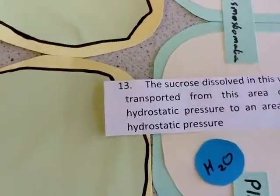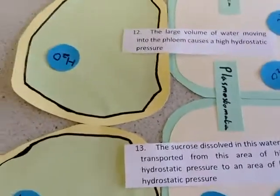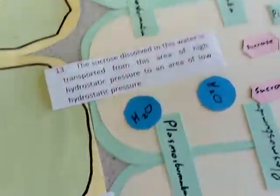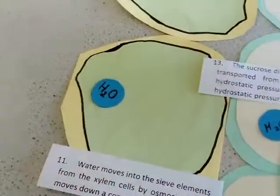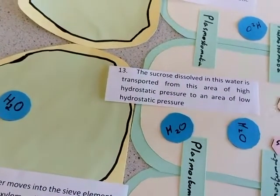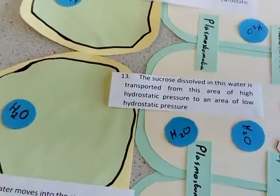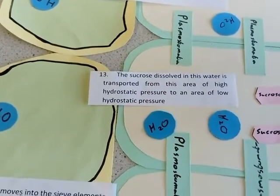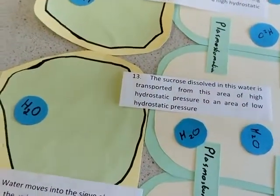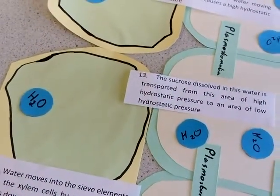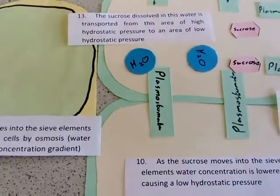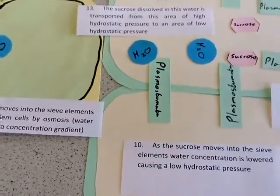This large volume of water that moves into it causes hydrostatic pressure. This increase in hydrostatic pressure enables the sucrose to be dissolved in the water. Because your hydrostatic pressure is always going to push things from an area of high hydrostatic pressure to an area of low hydrostatic pressure, this will start to move the sucrose from this area where it's a source, so where it's being made, down the plant until it gets to a sink, so where it's being stored.